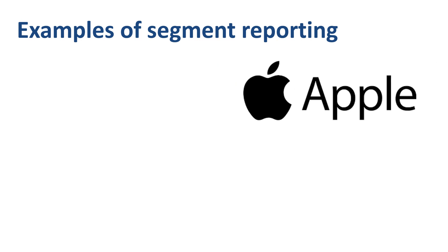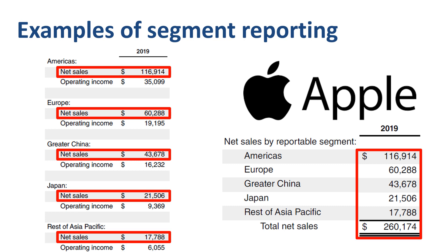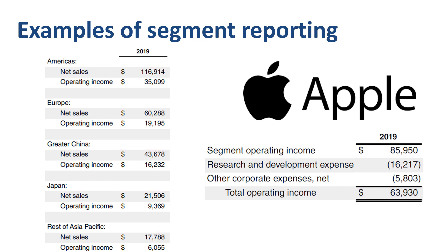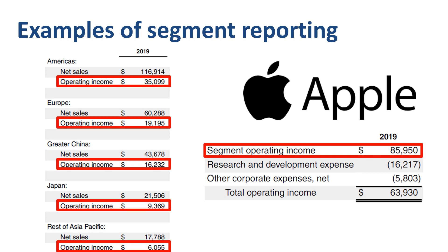Apple operates on a geographical basis. The sum of the net sales for the five geographical operating segments adds up to the total net sales for Apple as a whole. On the profitability side, the operating income for the five geographical operating segments adds up to a total number called segment operating income. From this you deduct research and development expense and other corporate expense to tie out the total operating income for the company. This is a good example of a reconciliation between the total amounts for the reportable segments to the financial statement amounts.